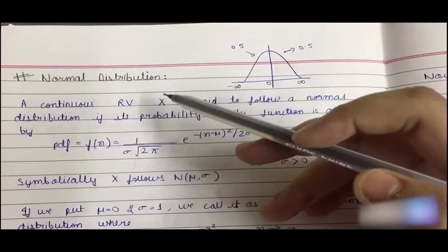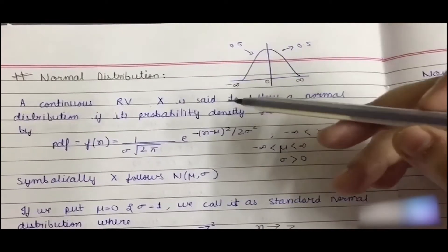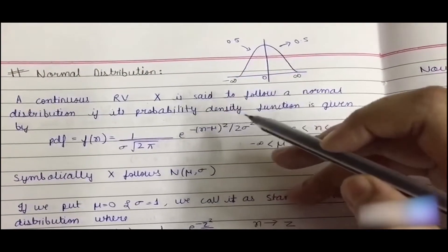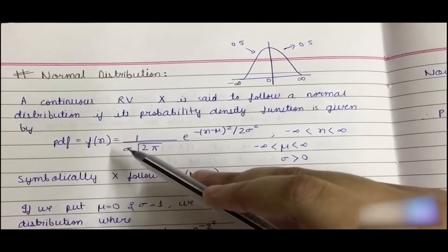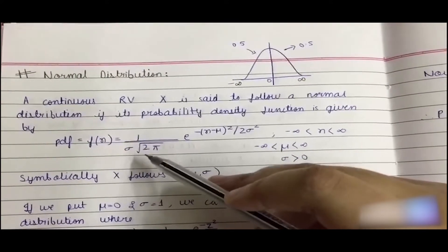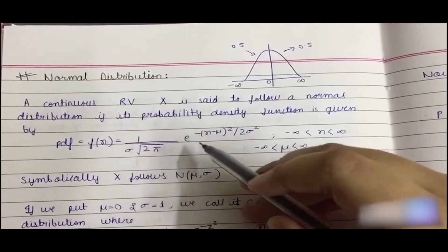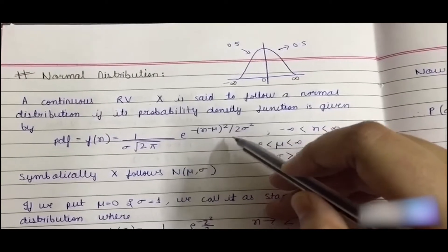What is a normal distribution? If we assume a continuous random variable X to follow a normal distribution, it would follow a normal distribution only if its probability density function is given by this formula: f(x) equals 1 by sigma root over of 2 pi, into e to the power minus (x minus mu) whole square divided by 2 sigma square.